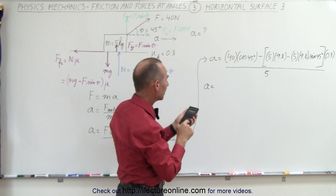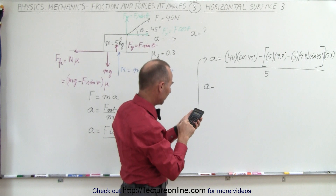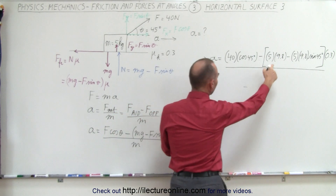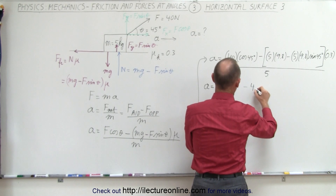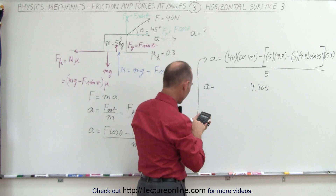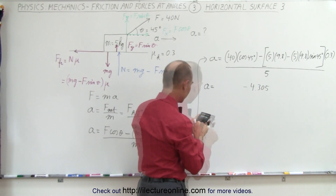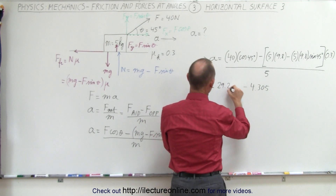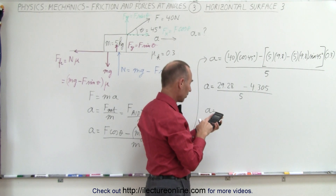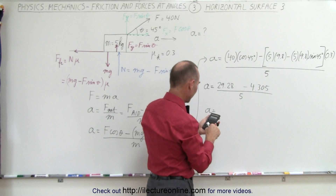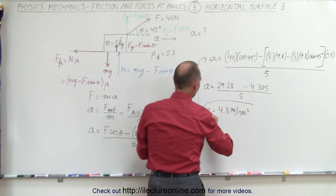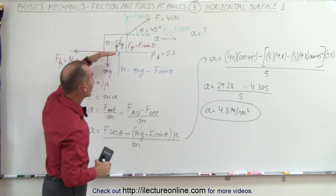Starting with the right side gives us 49 minus 49 times the sine of 45 degrees, multiplied by 0.3. So minus this quantity here is 4.305. Then plus 40 times the cosine of 45, which is 29.28, and we divide the whole thing by 5. So acceleration equals 29.28 minus 4.305, divided by 5, which gives us 4.8 meters per second squared as the acceleration of the block when pulled at that angle.